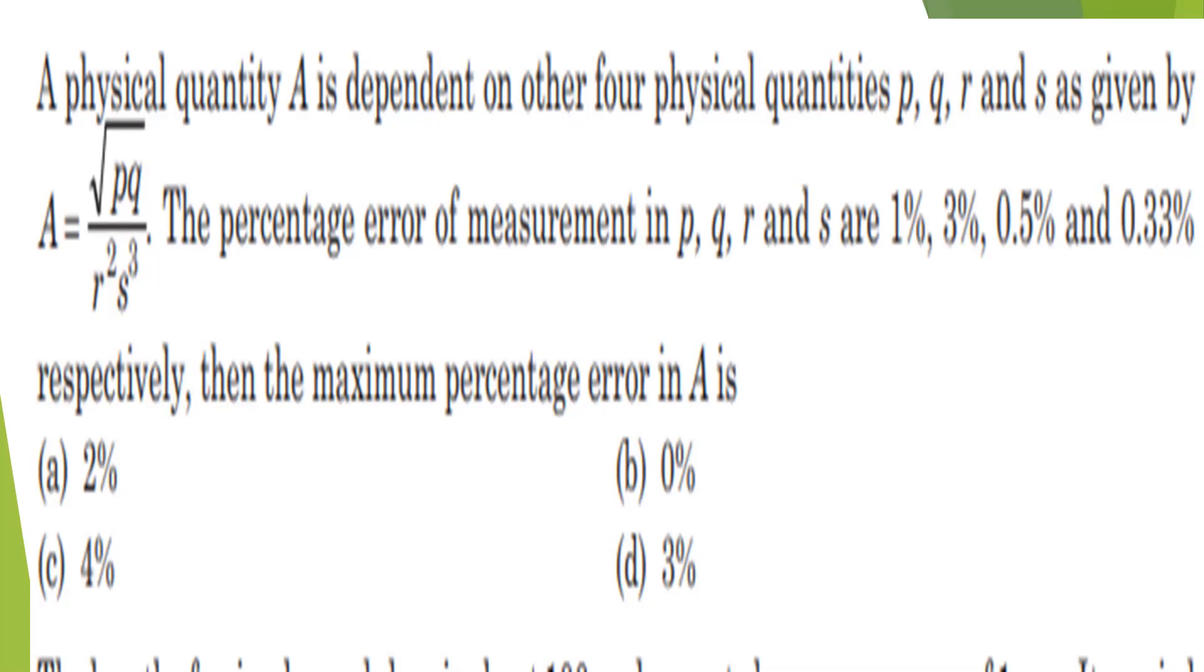Please write this formula: A equals square root of PQ by R squared S cubed. This is a most frequently appearing question in the NEET examination. The percentage of errors given for P, Q, R, and S are 1%, 3%, 0.5%, and 0.33%. Now how do we calculate the maximum percentage error?